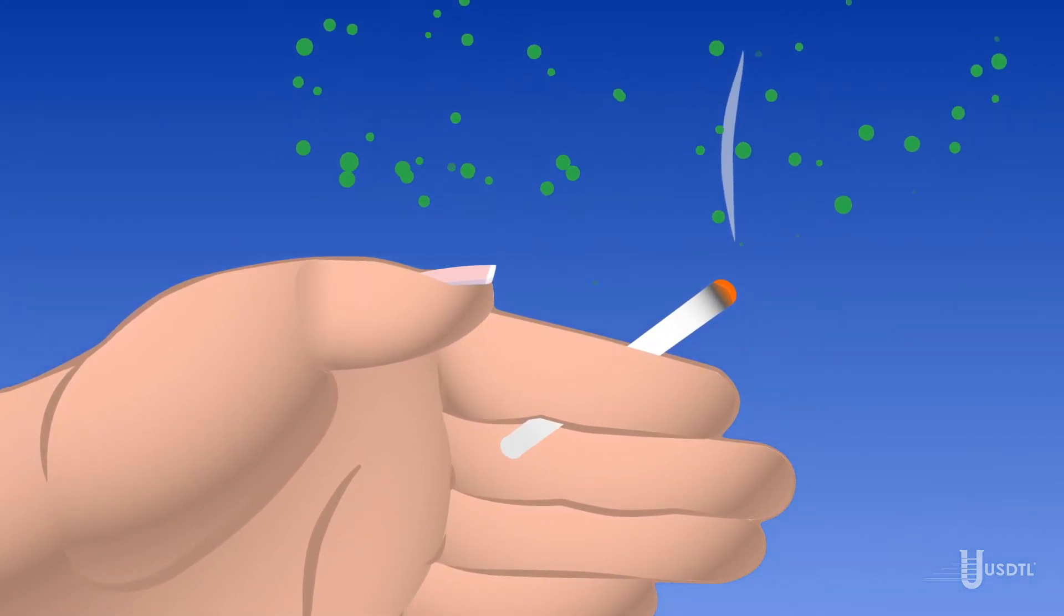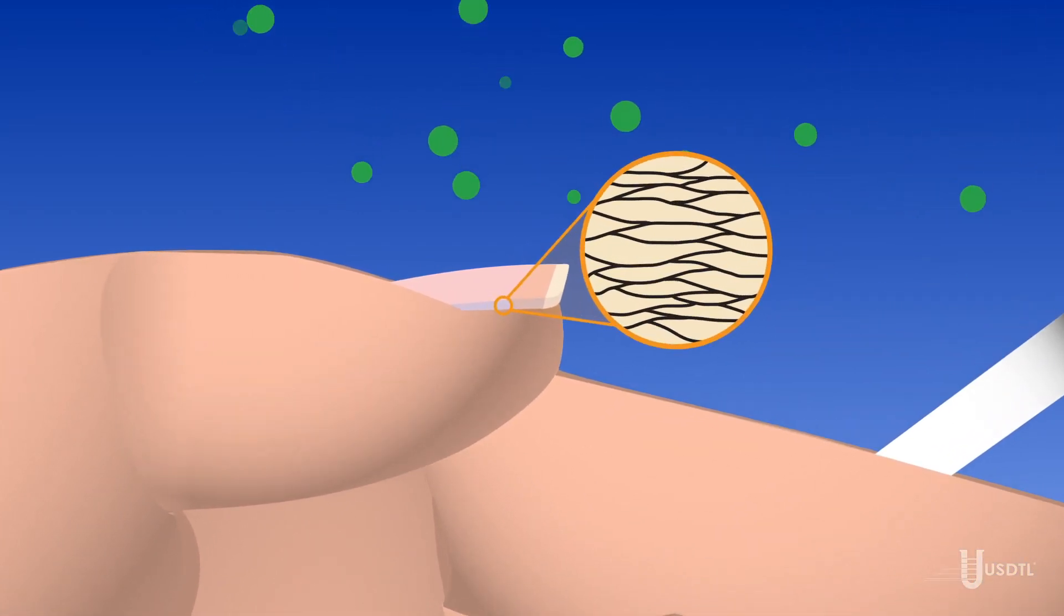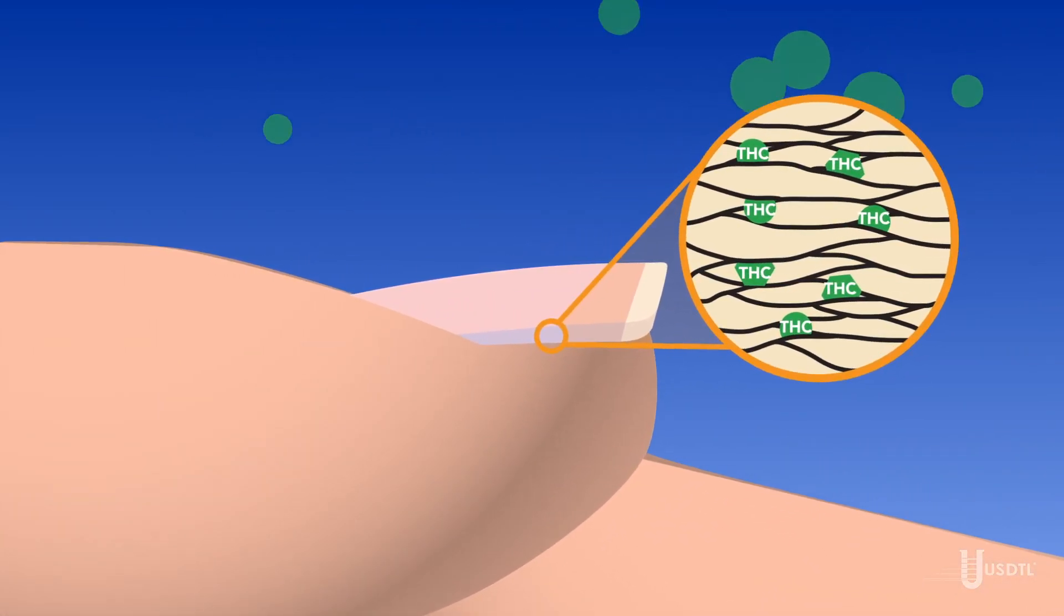Like hair, the first route of incorporation is environmental exposure. If someone is handling drugs or around someone smoking a drug, it gets on the nail and works its way into the pores, binding to the keratinized protein.